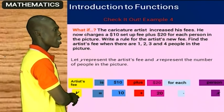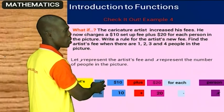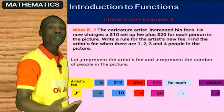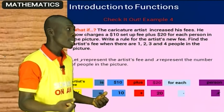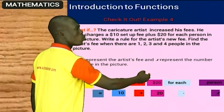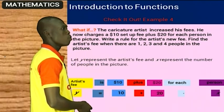The artist fee, let that be Y. The artist fee is $10—that's the setup fee for coming to him at all. So he charges $10 plus $20 for each person in the picture you ask him to paint for you.